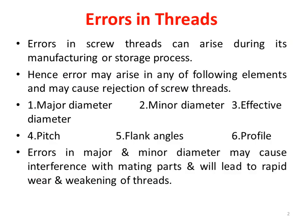Errors in screw threads can arise during the manufacturing or storage process. These errors may arise in any of the following elements and may cause rejection of the screw threads: major diameter, minor diameter, effective diameter, pitch, flank angles, and profile of the screw threads.